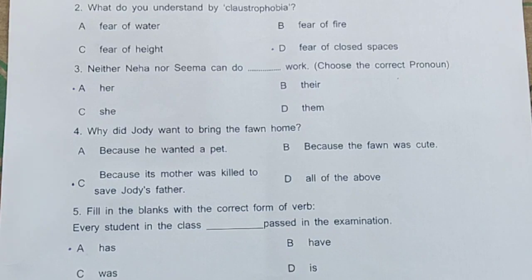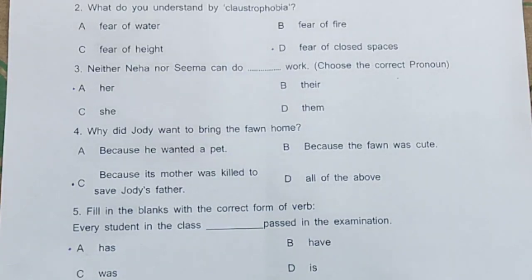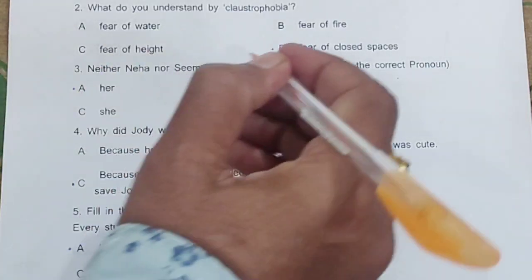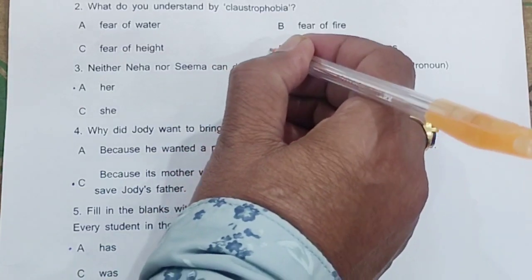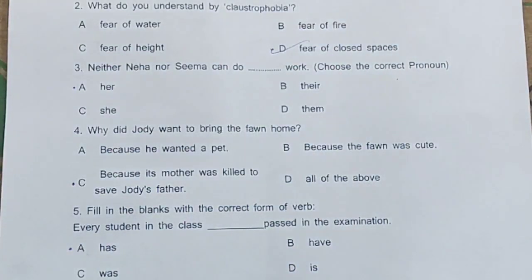Question 2: What do you understand by claustrophobia? a) fear of water, b) fear of fire, c) fear of height, d) fear of closed spaces. The correct answer is option D — fear of closed spaces.